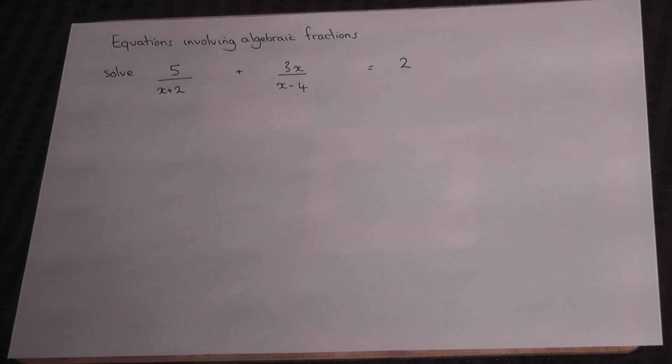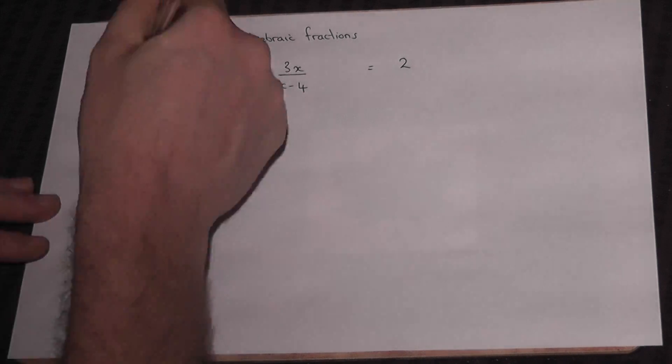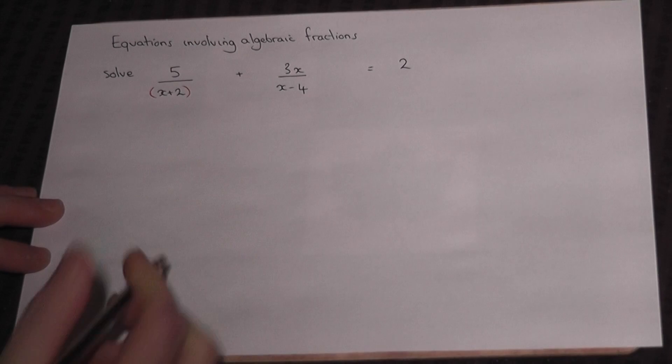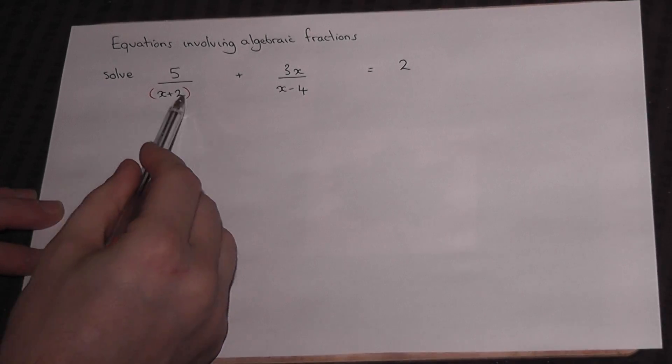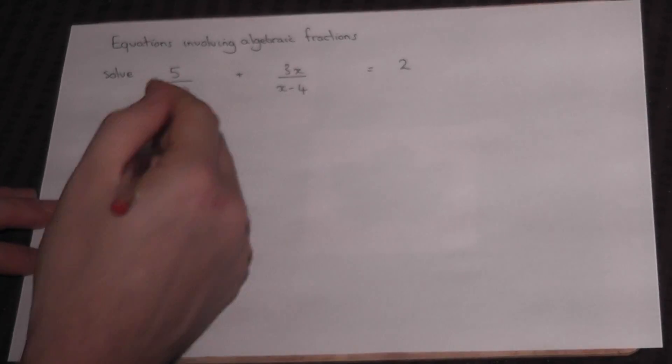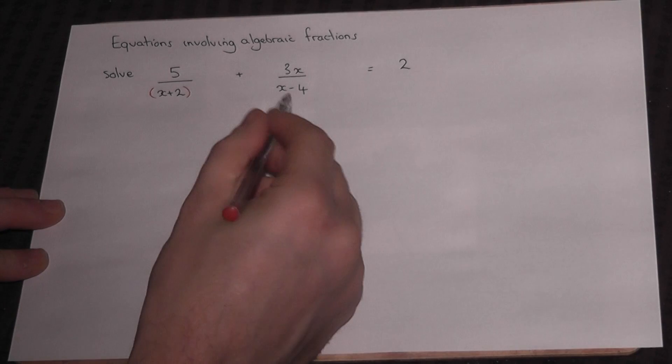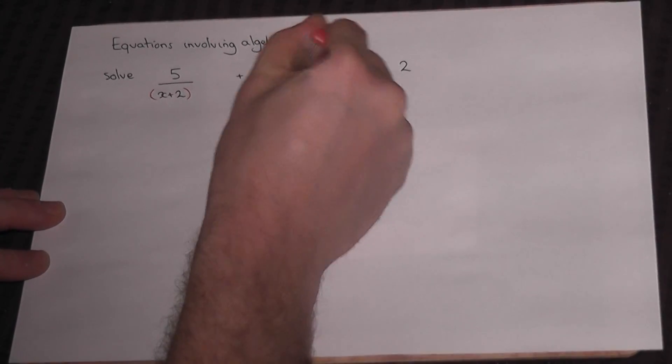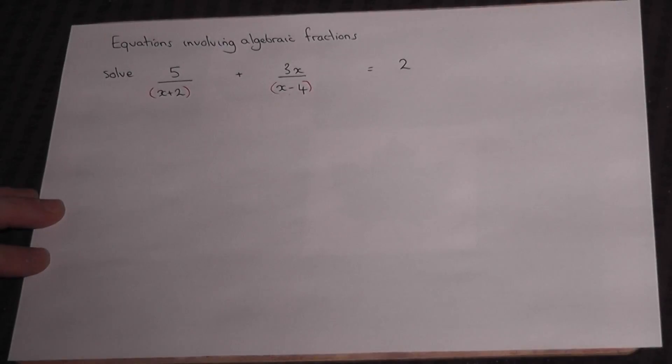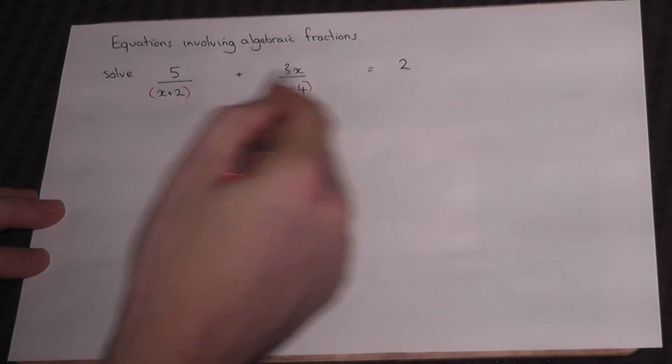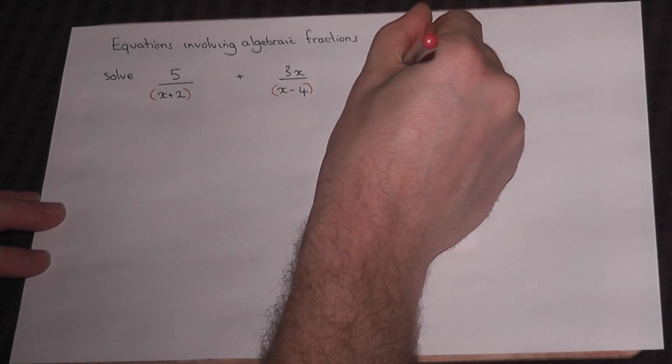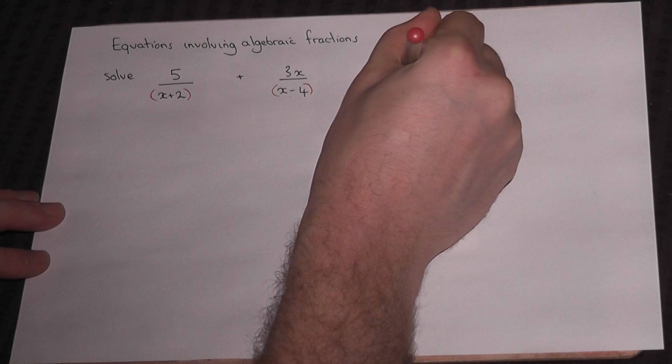This video looks at a fail-safe method for solving equations involving algebraic fractions. First, we place brackets around anything either above or below which contains more than one term, so x and 2 in brackets and x and minus 4 in brackets. We also write the integer as 2 over 1.